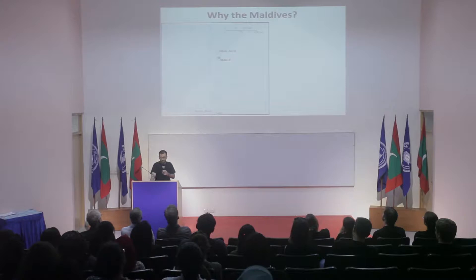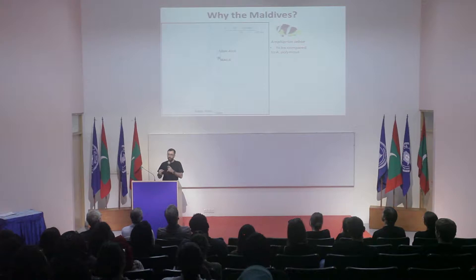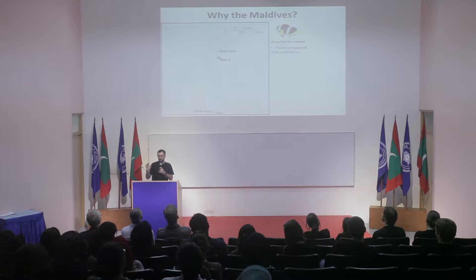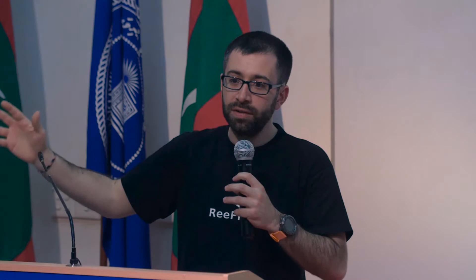What is very interesting in the Maldives is this particular species Amphiprion sebae, which lives in the Indian Ocean and has a very closely related species living in the Pacific Ocean, Amphiprion polymnus. It is very interesting for us to have sebae on this side and polymnus on the other side so we can compare them where they live separately, and then compare them with Indonesian or Thai populations where they are living closely together.